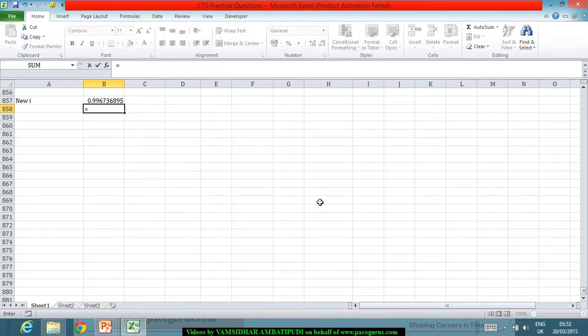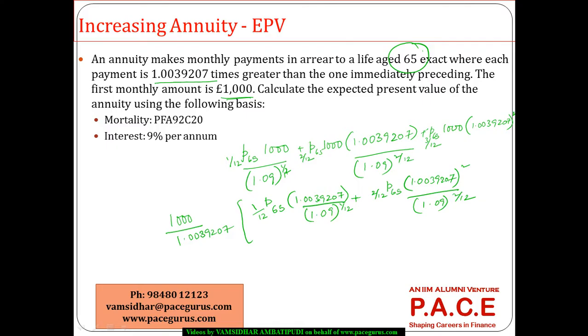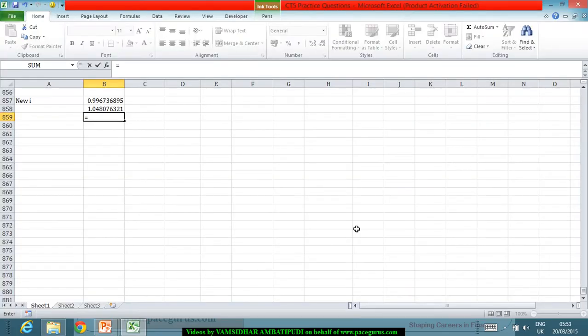So I will take this as 1.0039207 to the power 12. This is the number. This I will do it to the power 1 by 12, which means it would directly now be as good as saying 1.048 to the power 1 by 12 divided by 1.09 to the power 1 by 12. Everything to the power 1 by 12 is going to come out. So this number, I will divide it by 1.09.